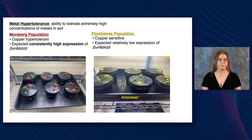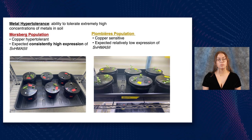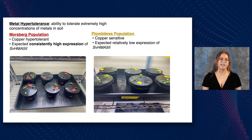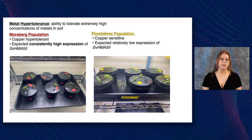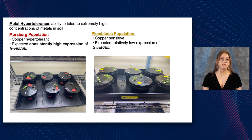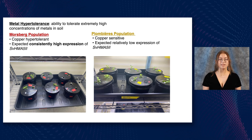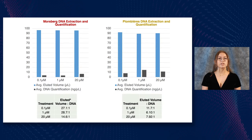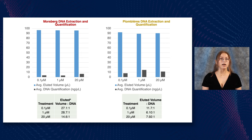Our model organism is Silene vulgaris, a metallophyte. We looked at two populations: one from a copper mine in Maasburg, Germany, which is copper hyper-tolerant, and one from a lead and zinc mine in Plombières, Belgium, which is copper-sensitive. We specifically looked at the gene SVHMA-52 to determine if it is a causal factor of copper tolerance. The two populations were treated with varying concentrations of copper (0.1, 1, and 20 micromolar) and DNA was extracted and quantified from the roots. We found that the Maasburg population's DNA increased with copper treatments, whereas Plombières increased and then dropped at 20 micromolar, showing that Maasburg thrived better in higher copper concentrations.